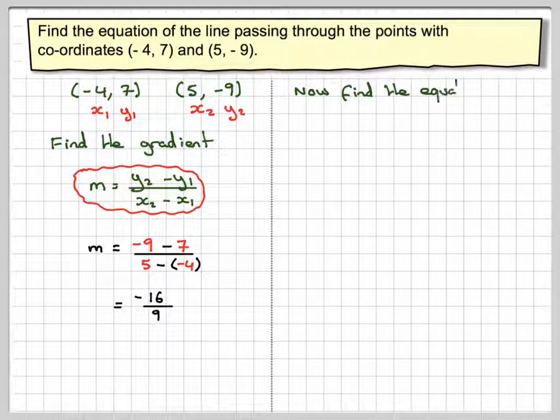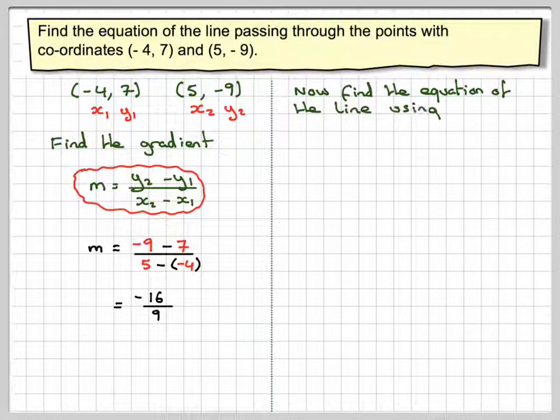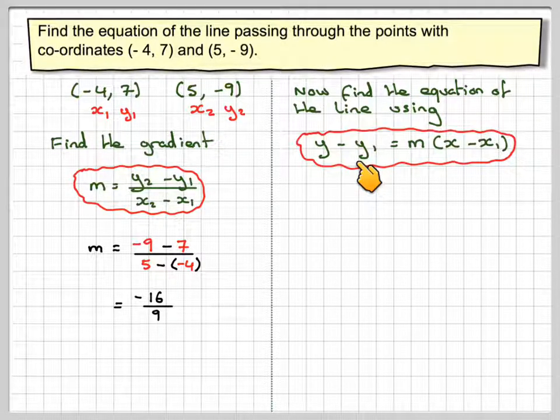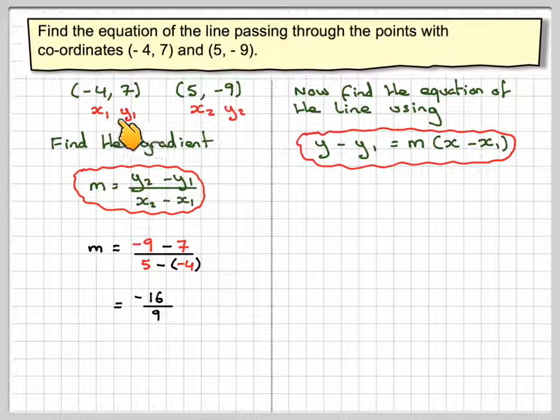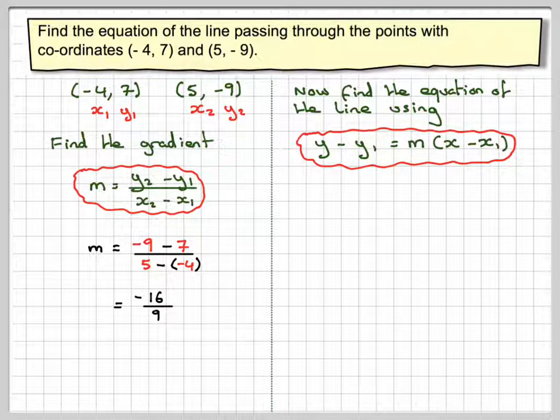Having done that we can now find the equation of the line. Using y minus y1 is equal to m brackets x minus x1. Now you can use this one or this one, it doesn't matter. You only need to use one of them.